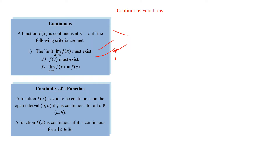The continuity of a function: a function is continuous either in general or on an interval if it's continuous at every point on that interval. Or if it's continuous in general, it's continuous for all x in the real numbers. This just means it's continuous everywhere — there's no weird places.